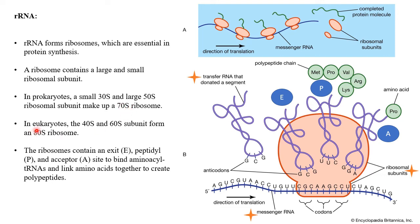In eukaryotes, the small subunit is 40S and the large subunit is 60S, making an 80S ribosome. Again, 40 plus 60 equals 100, but the combined value is 80S. That is the difference between rRNA in prokaryotes and eukaryotes — an important point you must remember.